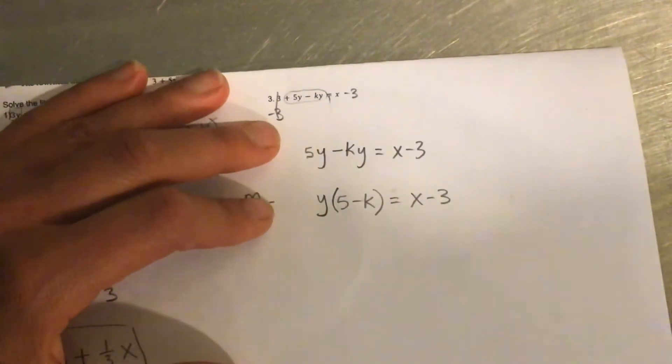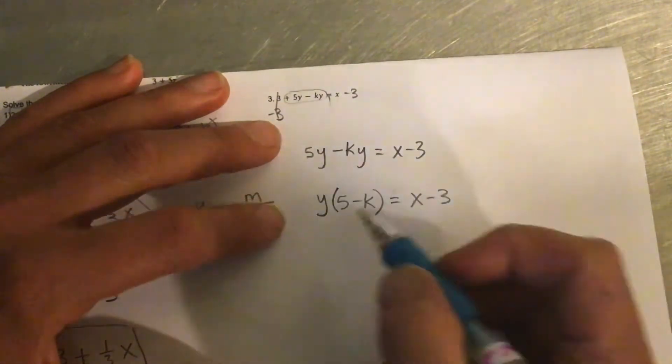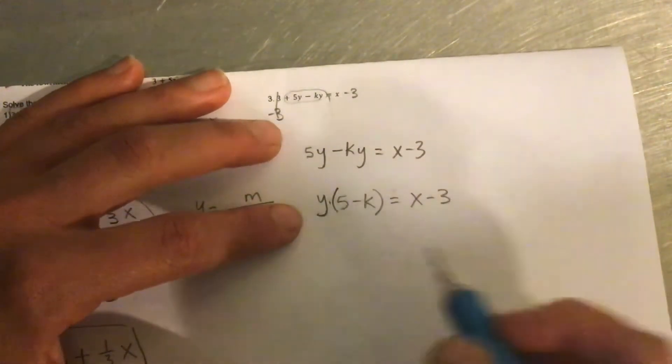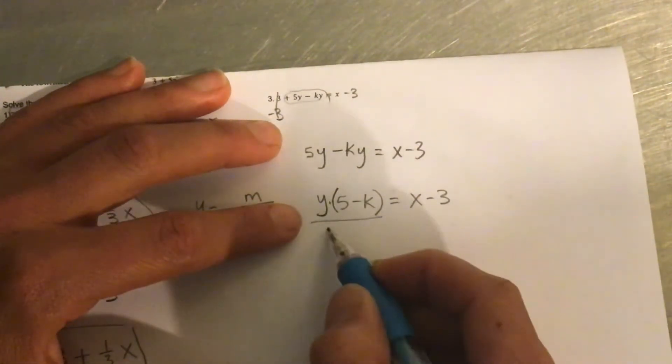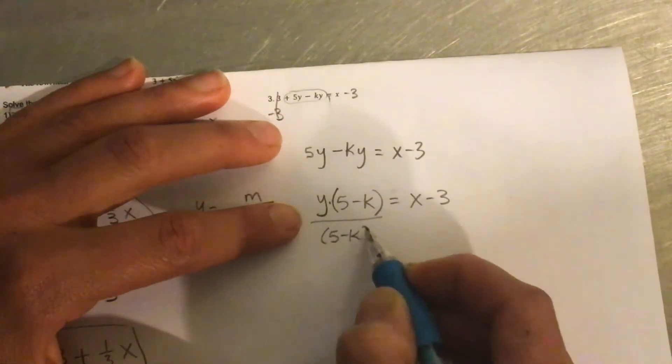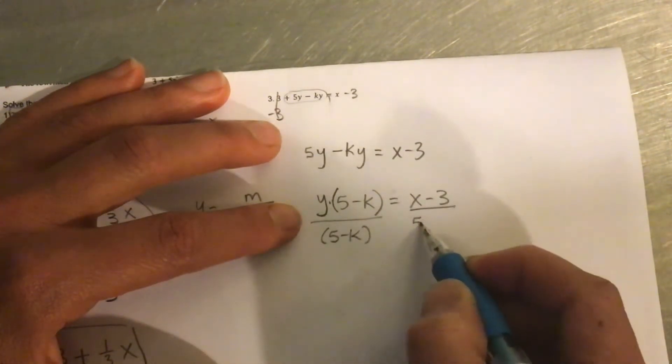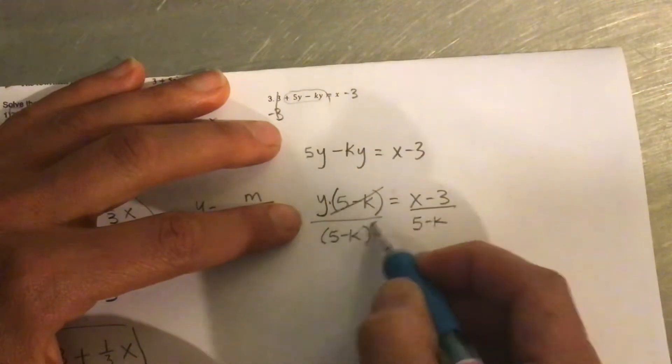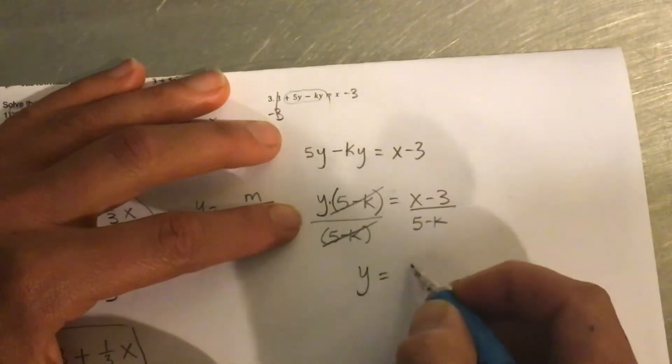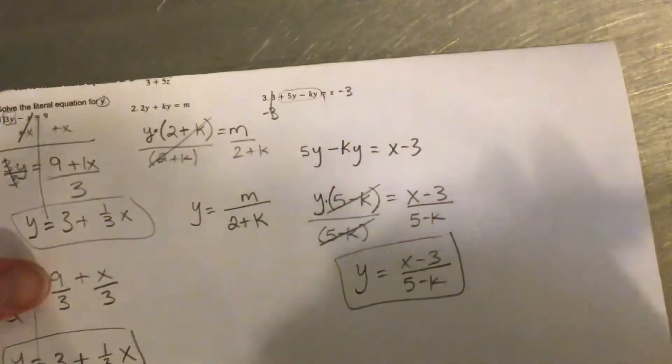Now see if you can do the next step on your own. Press pause. And what would you do? If you had to solve for y here, what would you do? Hopefully you paused. You recognize that that's multiplying. So you would divide 5 minus k. And you would divide 5 minus k. And y equals x minus 3 over 5 minus k.